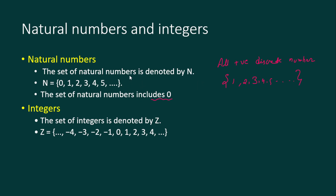In our course we include zero in the natural numbers as well. We denote the natural number by the symbol N. In general, when we include zero plus natural numbers, we call it whole numbers, but in our course we include zero in natural numbers.